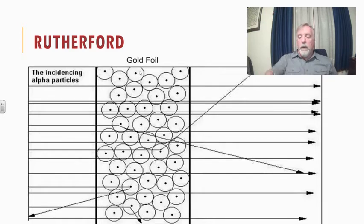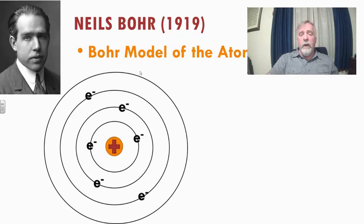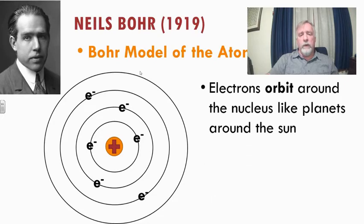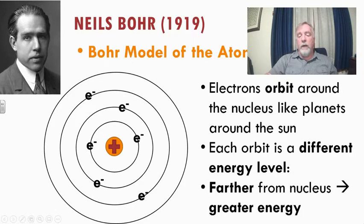That brings us to the first person we're talking about today: Niels Bohr. Around this time we were making great strides in physics and chemistry. We started learning that electrons were in different orbits, orbiting around the nucleus kind of like planets orbit around the Sun — a massive dense nucleus with electrons orbiting it. We understood from classical physics that the farther out from the nucleus an electron is, the higher energy it has.